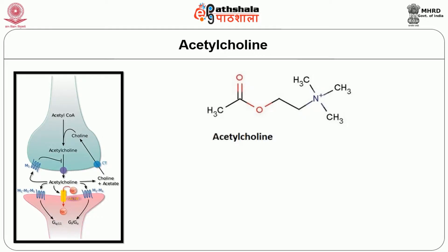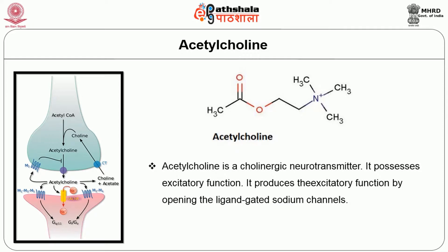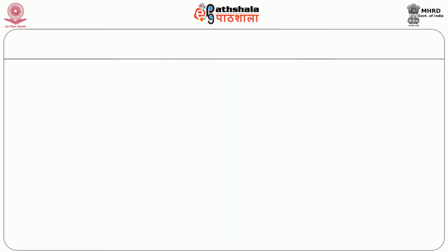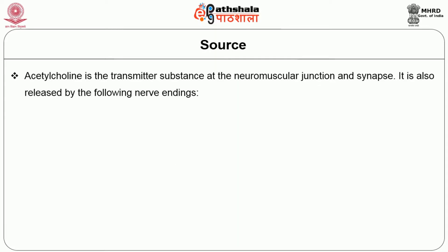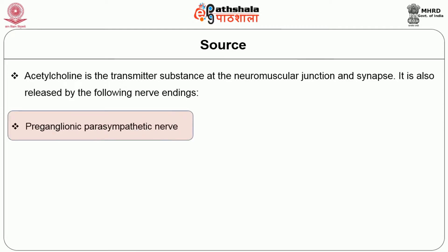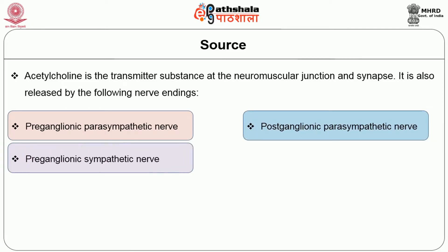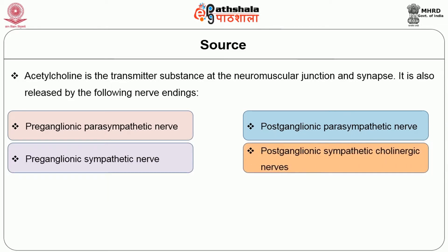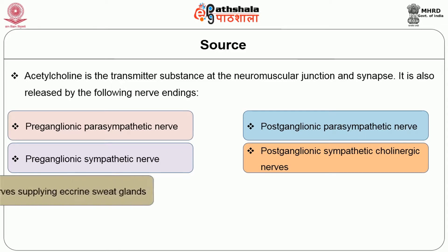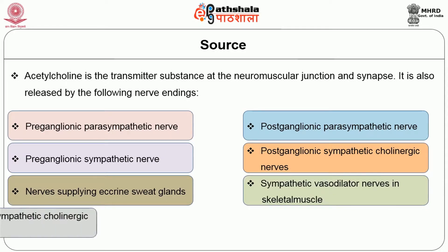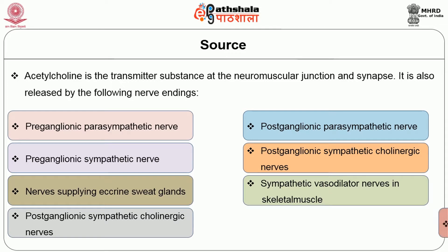Let us now look at some important neurotransmitters. The first one is acetylcholine — a cholinergic neurotransmitter that possesses excitatory function by opening ligand-gated sodium channels. Acetylcholine is transmitted at the neuromuscular junction and synapse. It is released by preganglionic parasympathetic nerves, postganglionic parasympathetic nerves, preganglionic sympathetic nerves, postganglionic sympathetic cholinergic nerves, nerves supplying eccrine sweat glands, sympathetic vasodilator nerves in skeletal muscle, nerves in amacrine cells of the retina, and many regions of the brain.